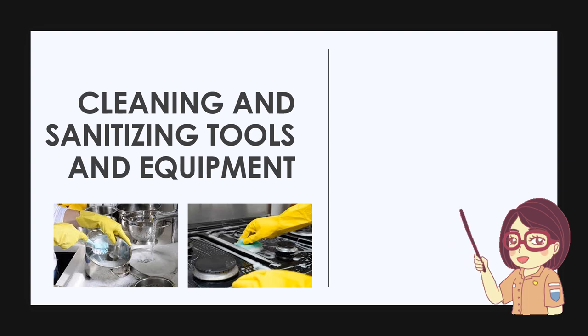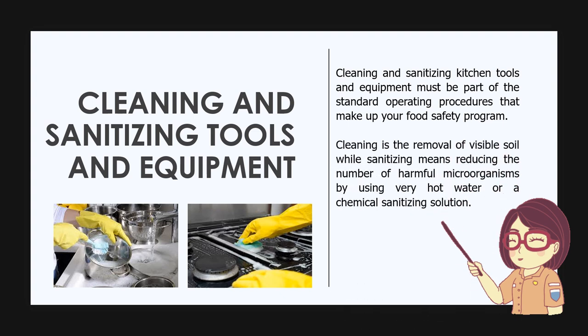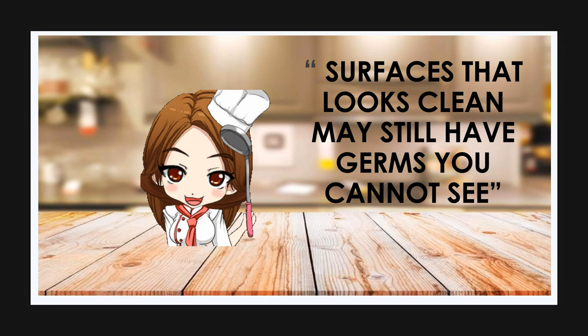Now that you know the definition of kitchen tools and equipment, let's take a closer look at cleaning and sanitizing. In the preparation of egg dishes, the first consideration is to identify the needed tools and equipment and how to clean and sanitize them after each use. Cleaning and sanitizing must be part of the standard operating procedure that makes up your food safety program. Cleaning is the removal of visible soil using soap and water, while sanitizing means reducing the number of harmful microorganisms by using very hot water or a chemical sanitizing solution. Remember: surfaces that look clean may still have germs you cannot see.